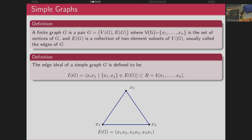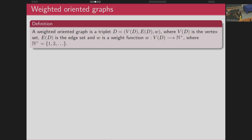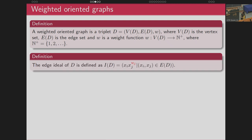Recently we are concentrating on weighted oriented graphs. A weighted oriented graph is a triplet where we have a set of vertices, a set of edges, and a weight function. We give a weight to each vertex, and we also give an orientation to each edge. We associate an edge ideal to this weighted oriented graph, defined by the generator XI · XJ^(WJ), where WJ is the weight of vertex XJ and the edge is directed from XI to XJ.